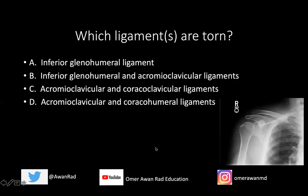The question I have for you is: which ligament or ligaments are torn? Is it the inferior glenohumeral ligament, the inferior glenohumeral and acromioclavicular ligaments, the acromioclavicular and coracoclavicular ligaments, or the acromioclavicular and coracohumeral ligaments?